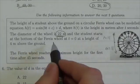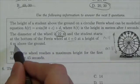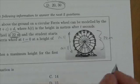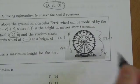And the student starts at the bottom of the Ferris wheel at t = 0 at a height of four meters above ground. So now that's giving us this separation right here. That's four meters.